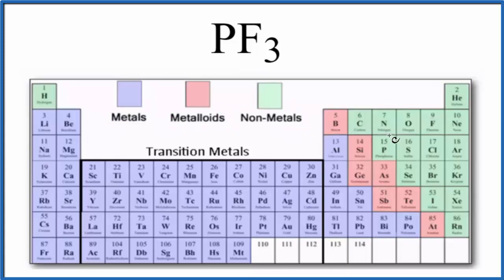So let's find phosphorus, that's right here, and then fluorine is over here. So these are both non-metals. When we have non-metals bonded together, we have a covalent compound, also called molecular. So PF3 is a covalent compound.